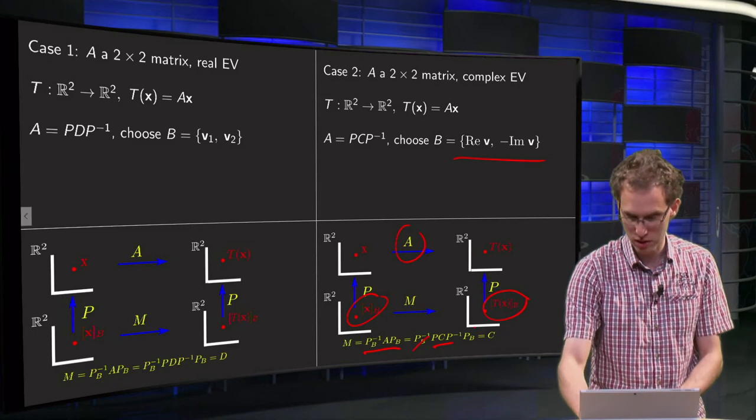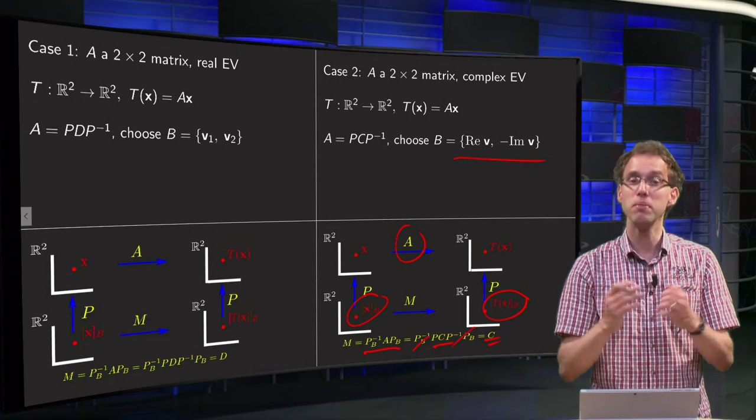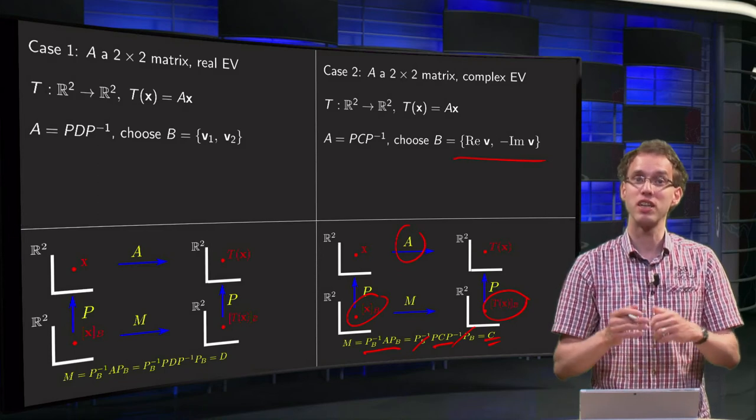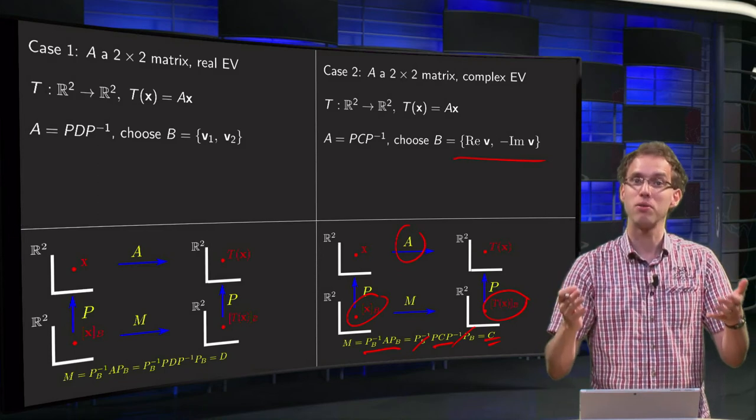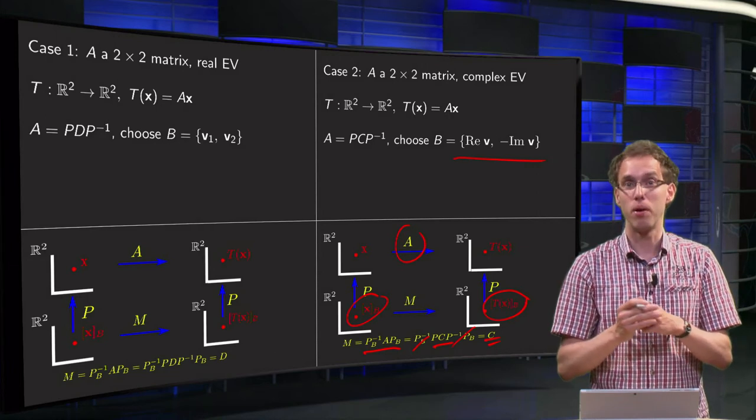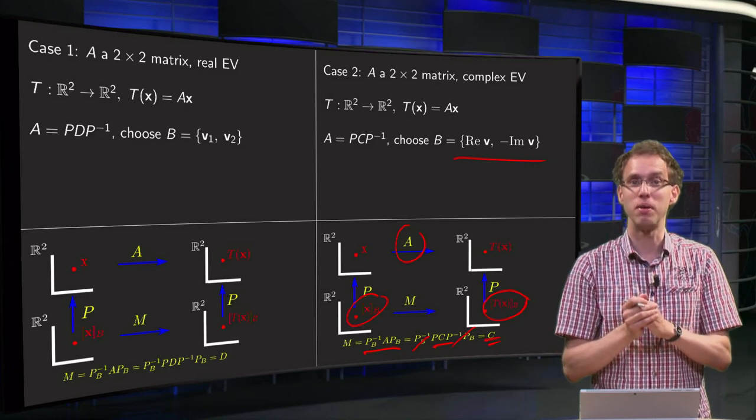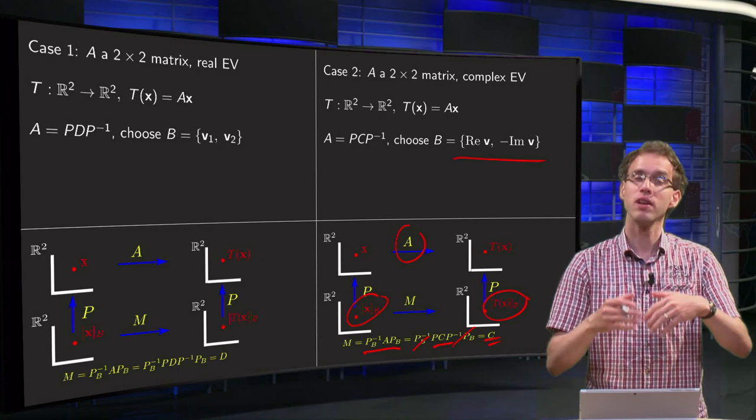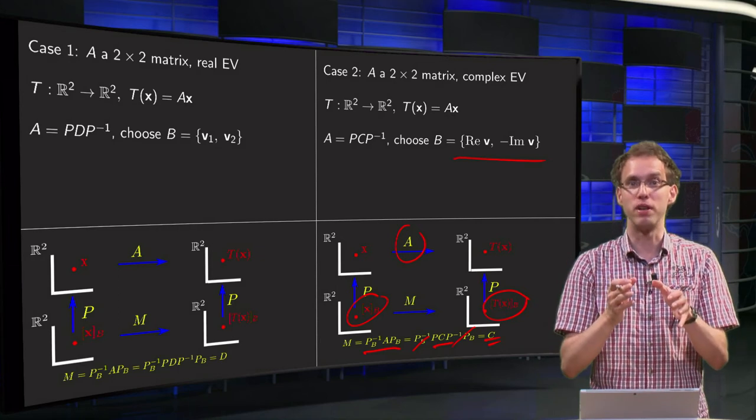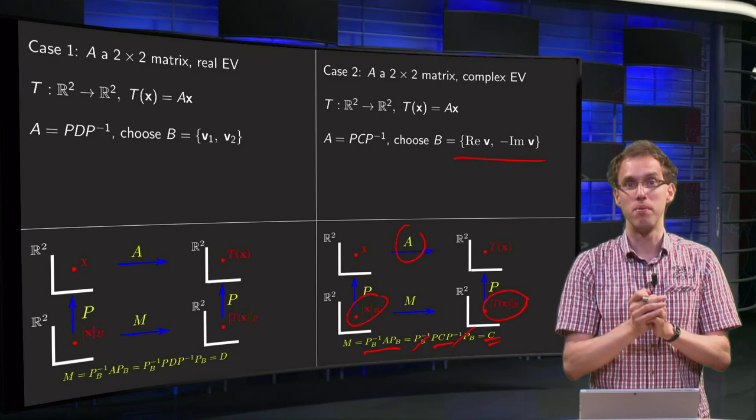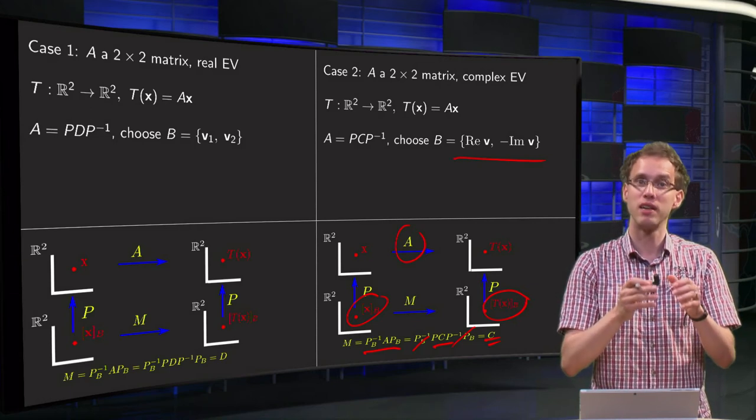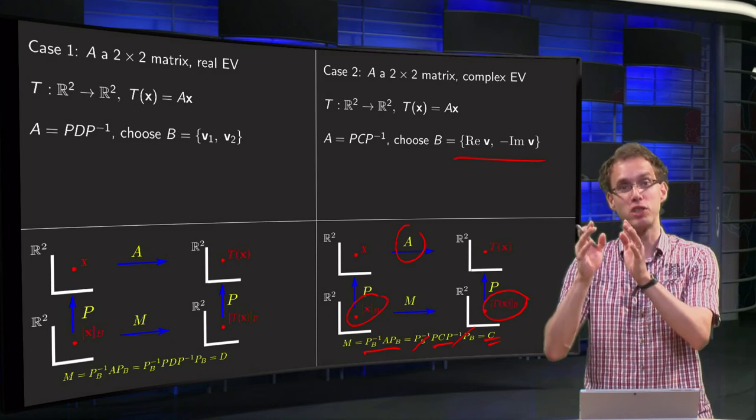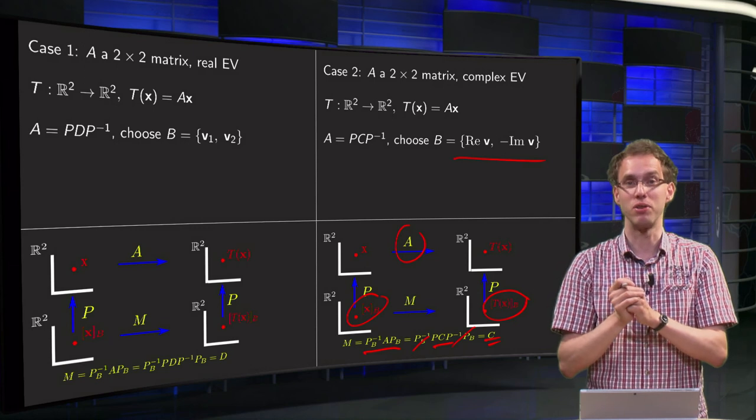Again, those matrices cancel out and we're left with the C matrix. So if a matrix is similar to a C matrix, I can choose another basis, and in that basis our M matrix exactly is a C matrix. That's the trick we can always do. Choosing the appropriate basis, we can either have a mapping which looks like M equals a diagonal matrix, or we have a mapping which looks like M equals a scaling-rotation matrix.